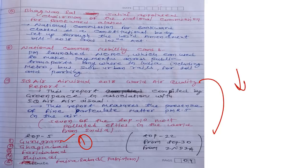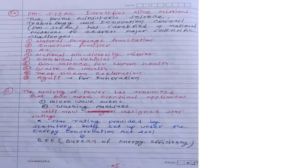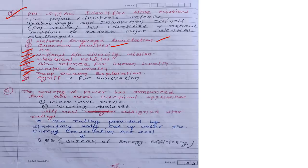Tenth current affair: PM-STIAC (Prime Minister's Science, Technology and Innovation Advisory Council) identified nine major challenges for India: natural language translation, quantum frontier, artificial intelligence, national biodiversity mission, electric vehicles, bioscience for human health, waste management, deep ocean exploration, and Agni.